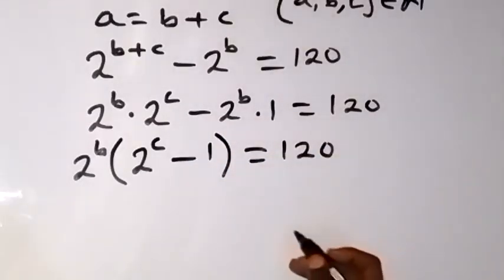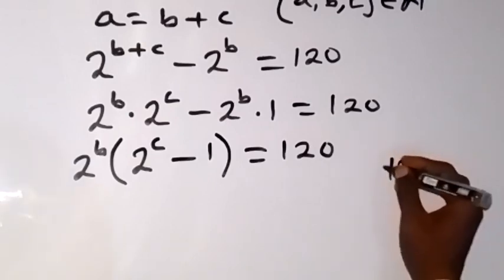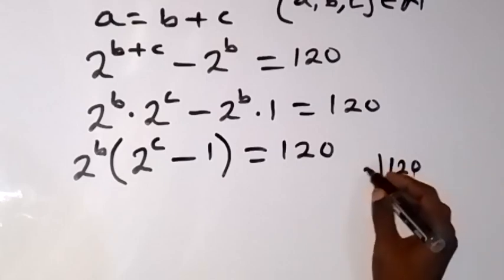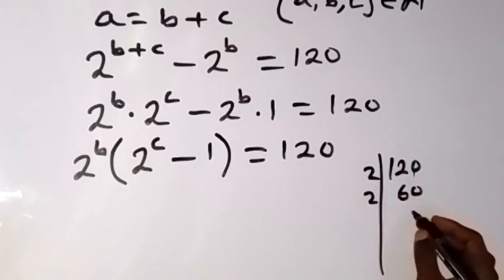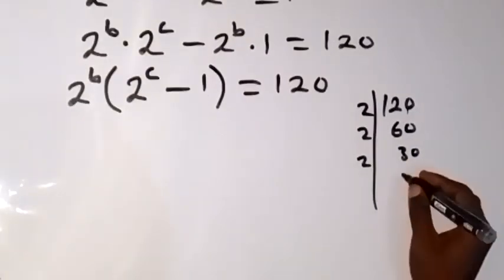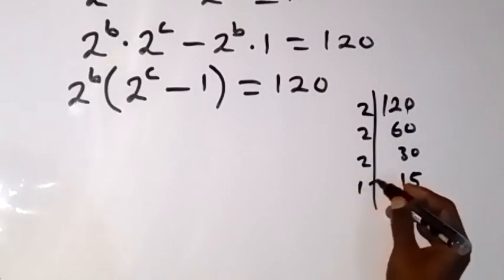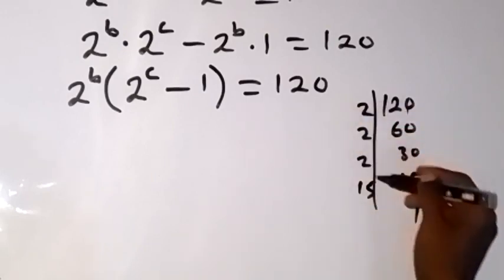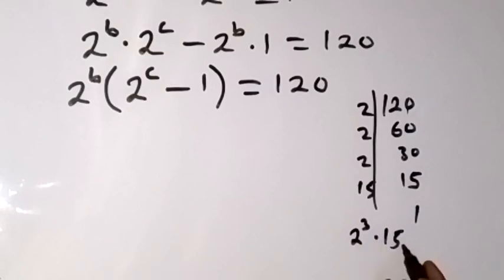Now let us break 120 down by dividing through by prime numbers. 2 goes into 120 giving 60, 2 goes again giving 30, 2 goes again giving 15, and 2 cannot go into 15 so we stop. That gives us three 2s, which is 2 raised to power 3, times 15. So 120 can be expressed as 2 raised to power 3 times 15.